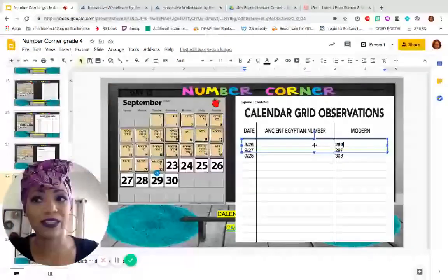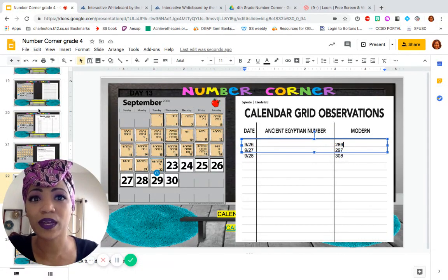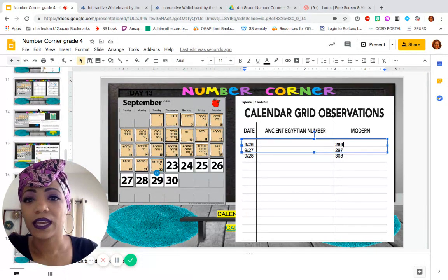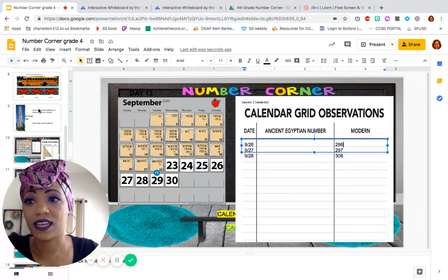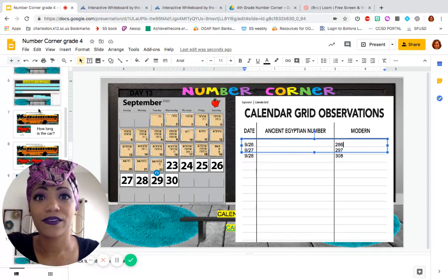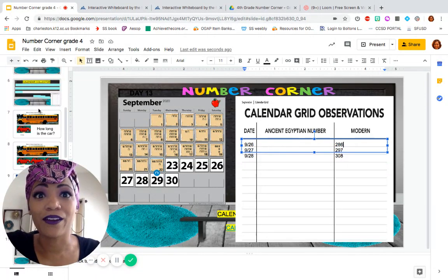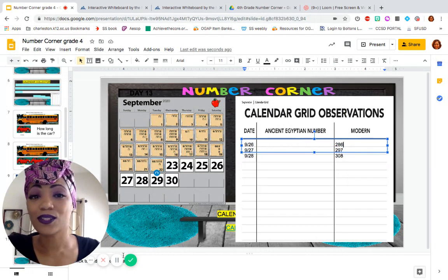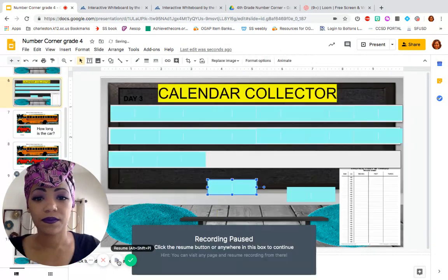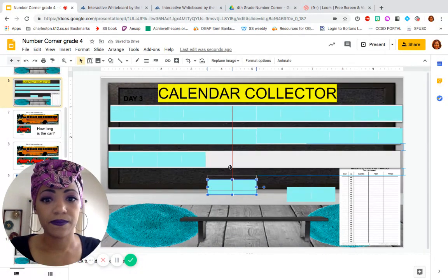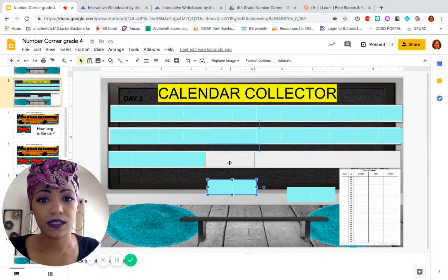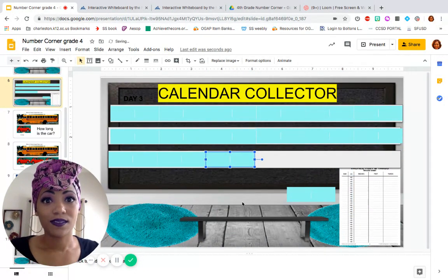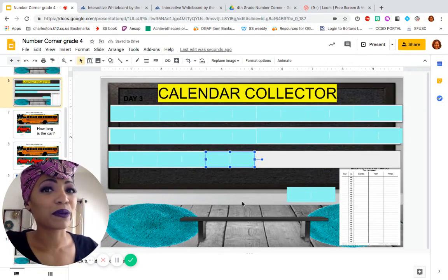Let's look at our calendar collector today. That's where we're going to spend the bulk of our time. Today, with it being the 15th day of school for September, we need to add our 15th 6-inch piece and also update our recording sheet. So, here we go. 15th piece.